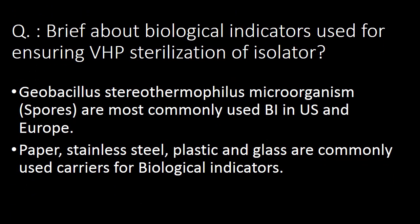Brief about biological indicators used for ensuring VHP sterilization of isolators: Geobacillus stearothermophilus microorganism spores are commonly used as biological indicators in the US and Europe for ensuring VHP sterilization of isolators. Paper, stainless steel, plastic, and glass are commonly used carriers for these biological indicators.